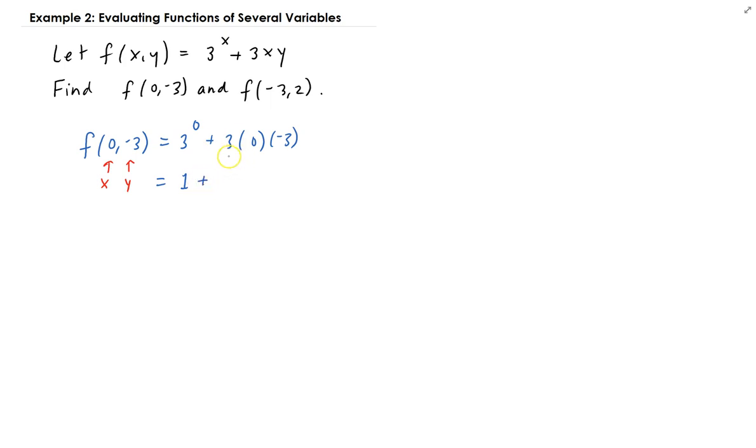this is just going to be 0, because you have 3 times 0 and 0, 0 times minus 3 is 0. So this is going to give us 1. So therefore, f of 0, minus 3 is equal to 1.